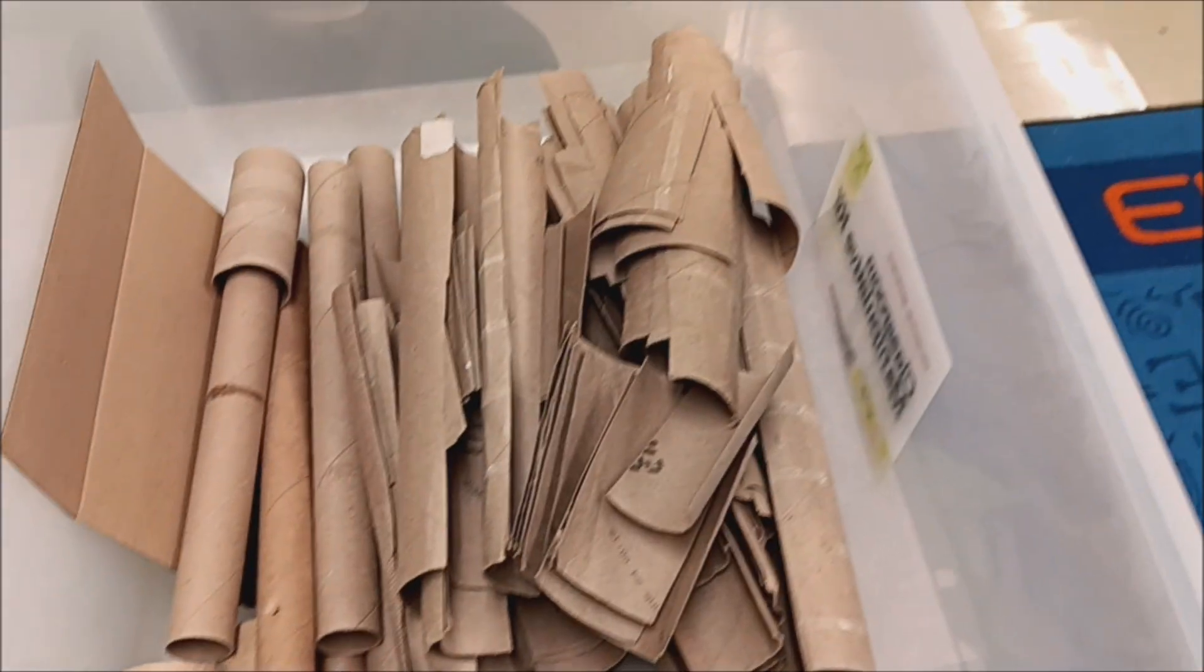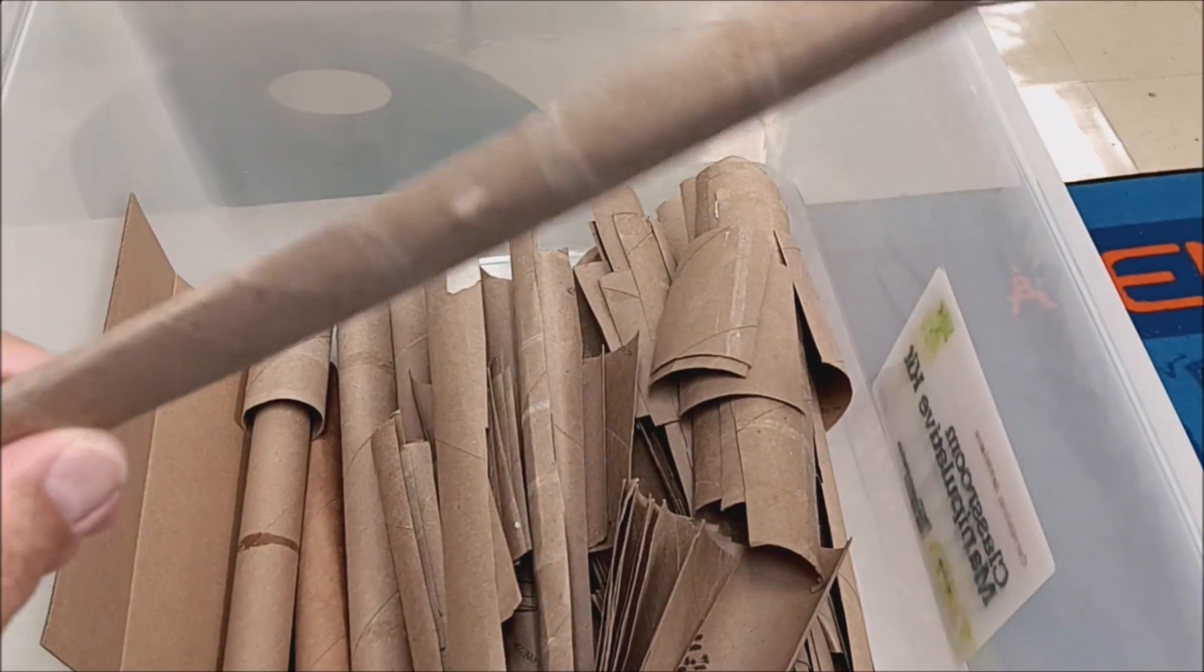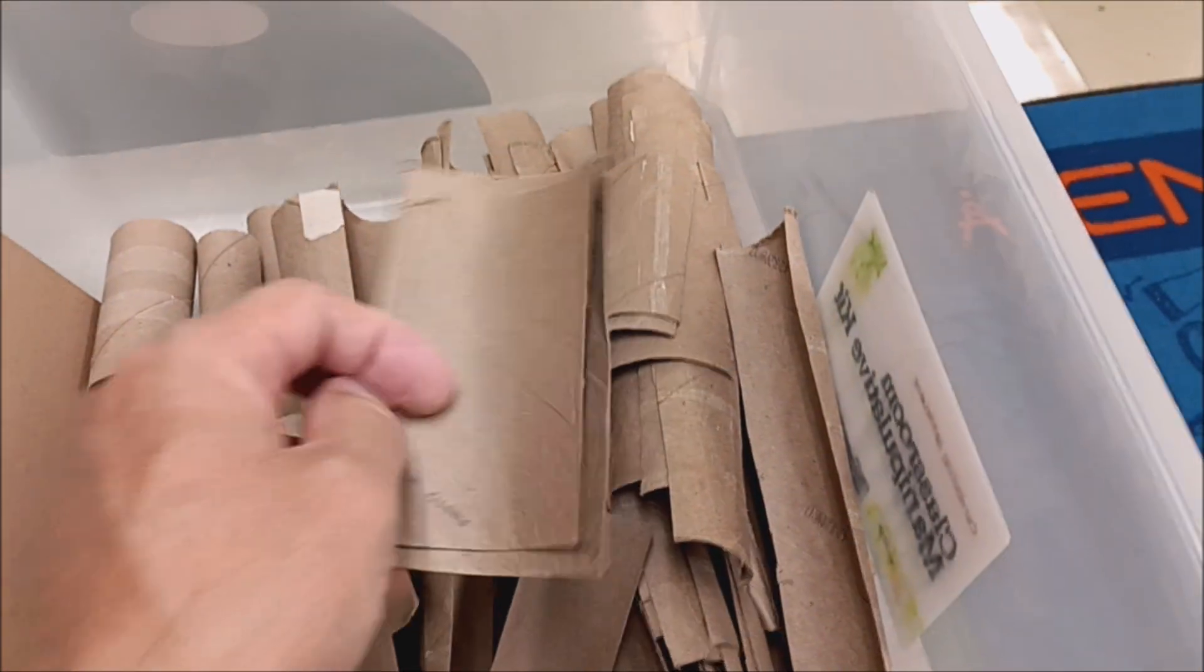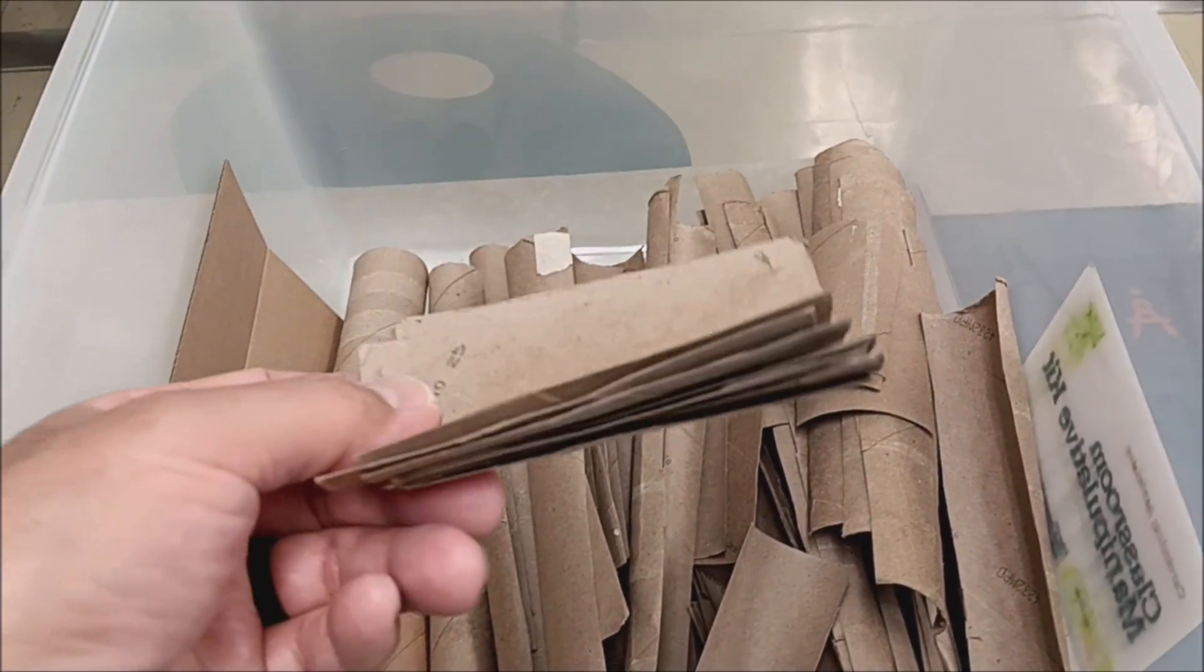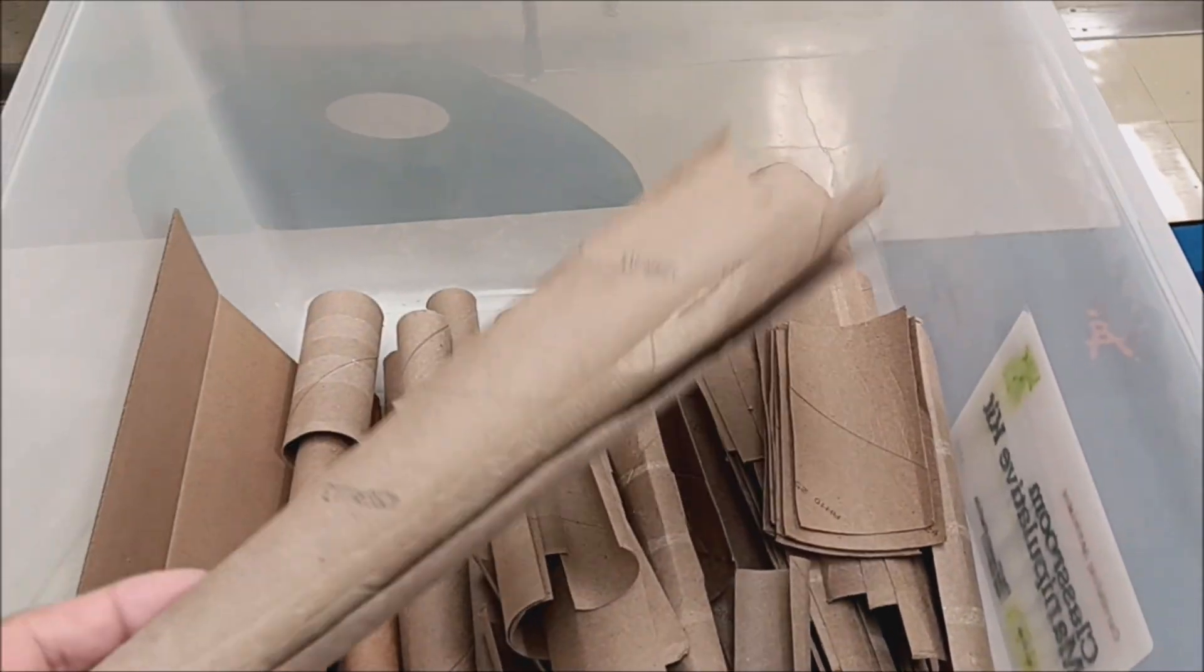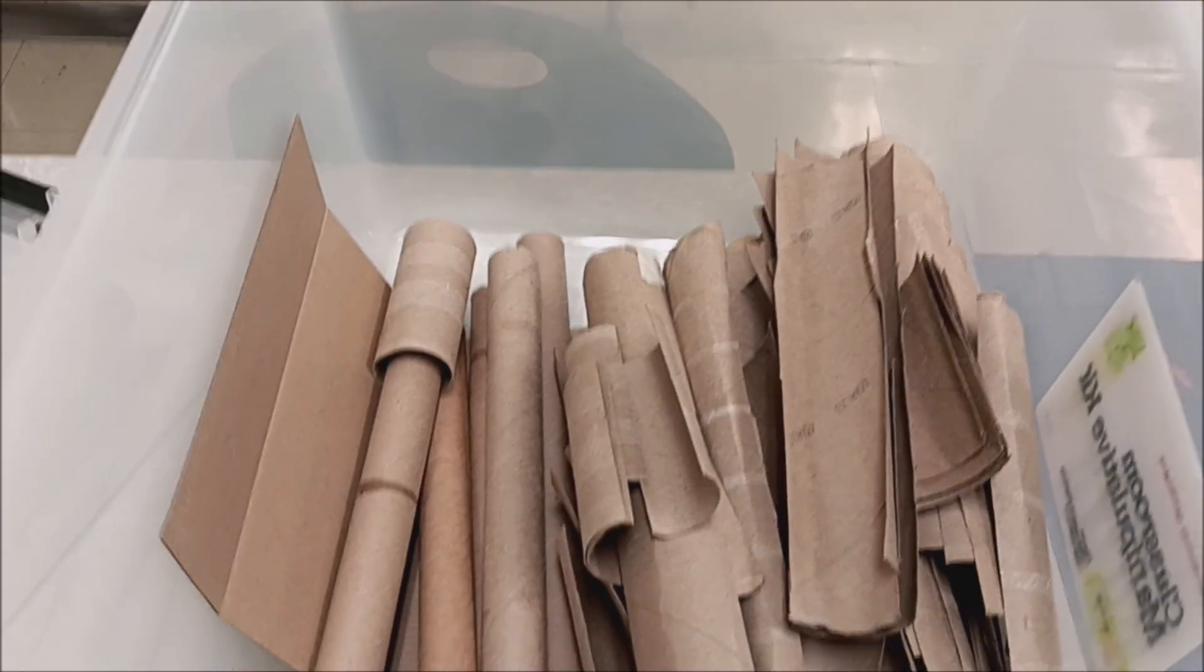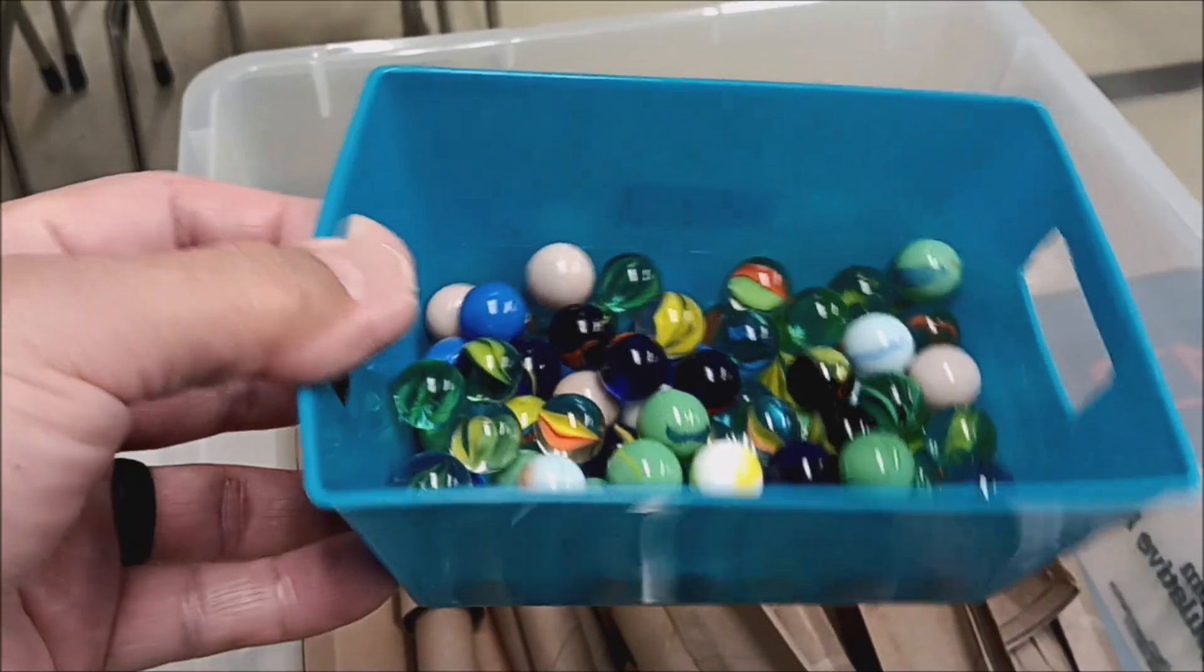Okay, so for your materials, you're going to need a lot of paper towel rolls. I cut them in half so they're good tunnels or tracks for the marbles. You can use toilet paper rolls too, but paper towel rolls are better because they're longer. You'll also need lots of masking tape and marbles. Let's go to the project.